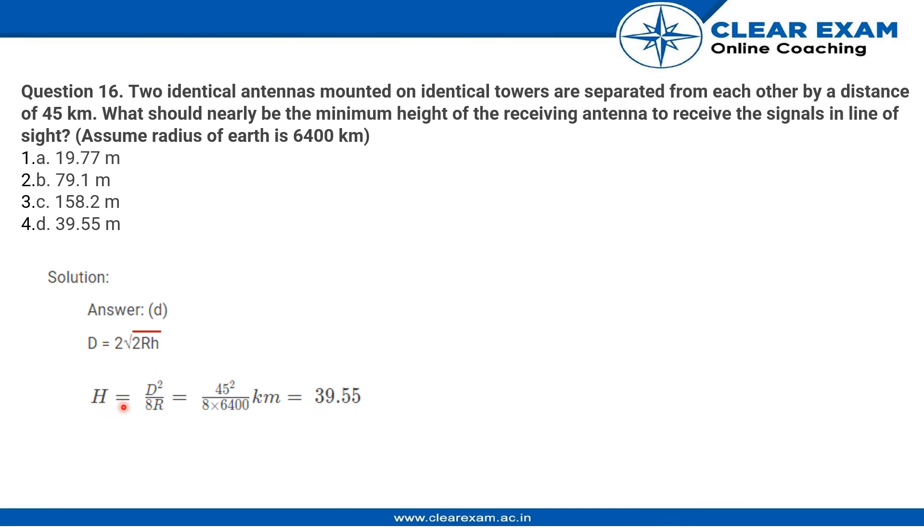The height of the antenna becomes 45 squared upon 8 into 6400, which equals approximately 39.55 meters. So option D is the correct answer. Thank you.